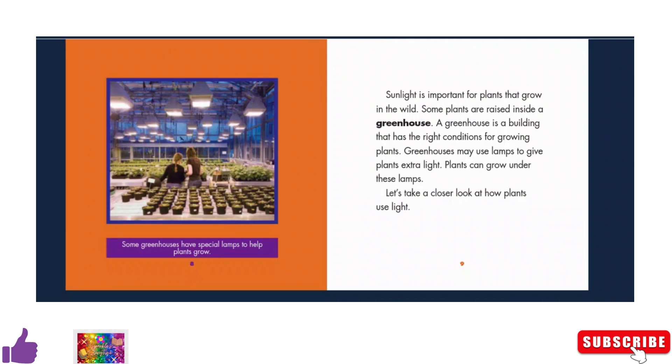Some greenhouses have special lamps to help plants grow. Sunlight is important for plants that grow in the wild. Some plants are raised inside a greenhouse. A greenhouse is a building that has the right conditions for growing plants.